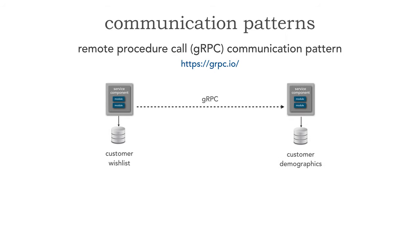When we look at gRPC, let's say in our example that the customer demographics service on the right-hand side has all the profile and demographics information about our customers — name, address, all sorts of profile information. The customer wish list contains all of the wish list items, but I need to communicate with customer demographics because I have the customer ID but not the name of the customer. Every time we retrieve the wish list, I correspondingly need the name of the customer — it's part of my contract.